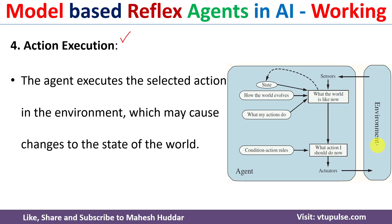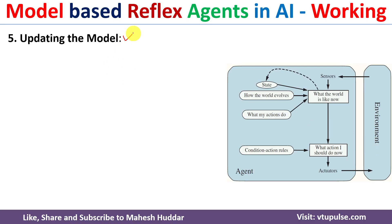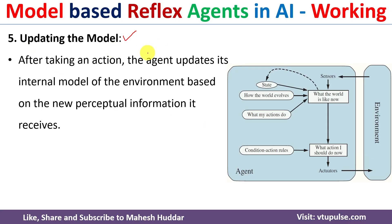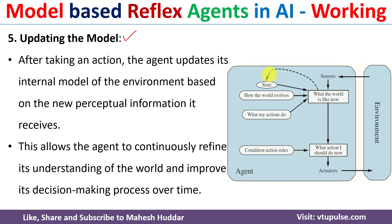In the fifth step, because an action was executed and the environment state has changed, the internal model will be updated. Before executing the action, the agent anticipated what could happen. Once executed, it checks whether the same thing happened. If something else happened, the internal model is updated. By continuously updating the internal model based on executed actions, the agent learns from its experiences. The input will be searched in the internal model, and based on the learned model, an action will be selected and executed.